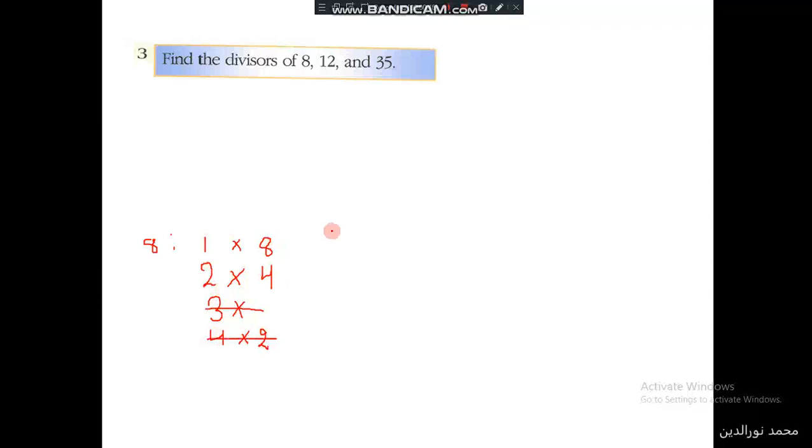What are the factors of 12? The factors of 12 are 1 times 12, 2 times 6 is 12, 3 times 4. And then 4 times 3, and we say that it's repeated. They are the same, 4 and 3. So we cancel it and we have finished.